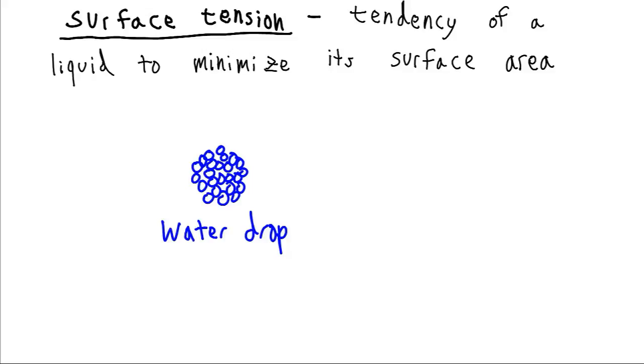Another bulk property of liquids attributable to intermolecular forces is surface tension. This is the tendency of a liquid to minimize its surface area. Consider a water droplet. Why does it tend to form into a sphere by nature?